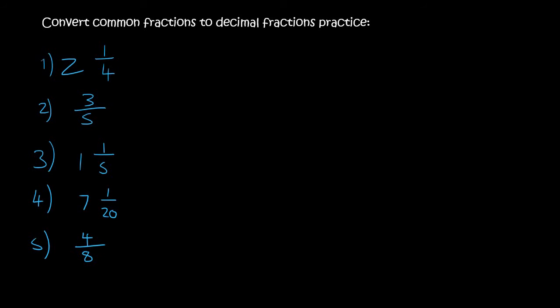Hi guys, so in this lesson we're going to practice converting common fractions to decimal fractions. So here we have 2 and a quarter. Remember we should always change it to an improper fraction first. So 2 times 4 is 8, plus 1 is 9, so 9 over 4.